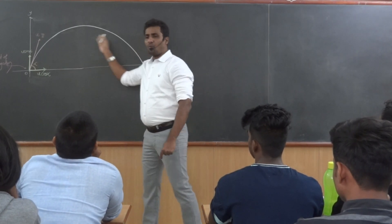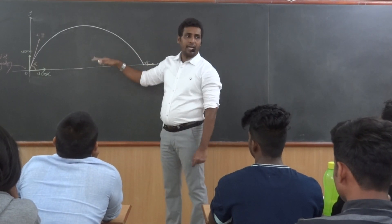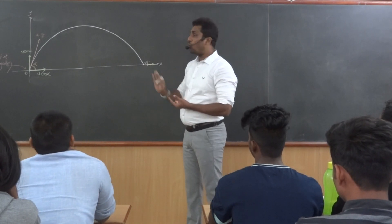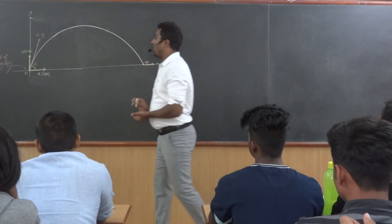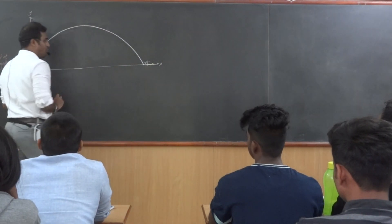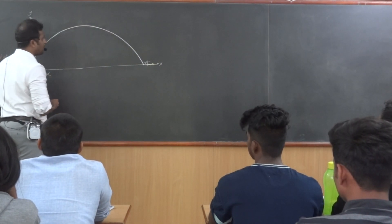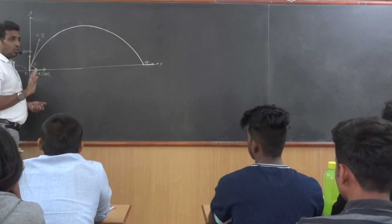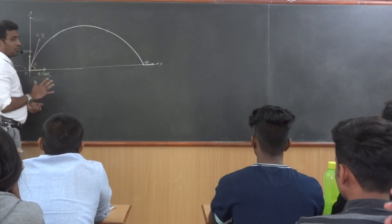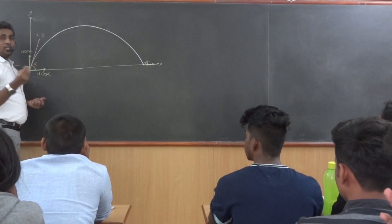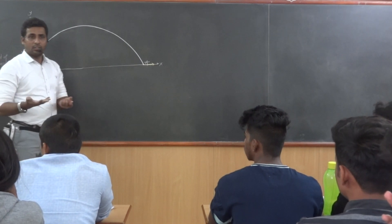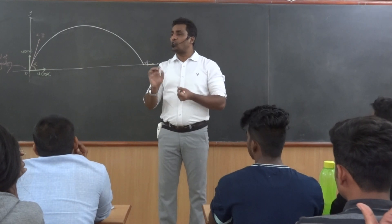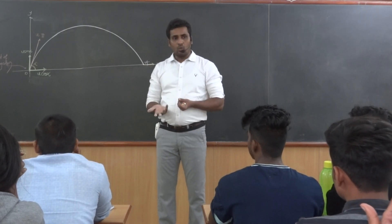What does this equation actually look like? A few basic things must be known to us. Locus — what is Locus? It is a collection of points which will satisfy a geometrical condition. That is what Locus is.